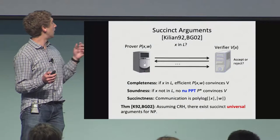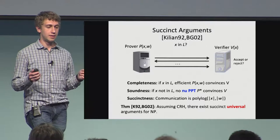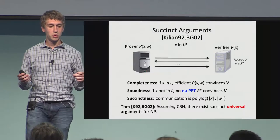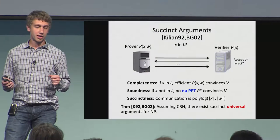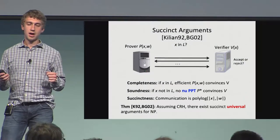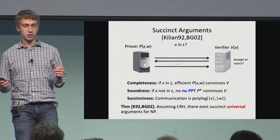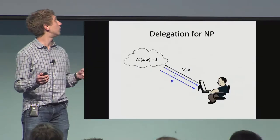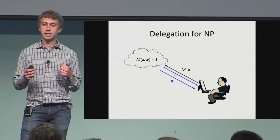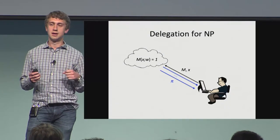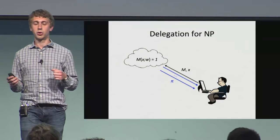Assuming just collision resistance, Killian and then later Brock and Goldreich in 2002 showed that there exist succinct universal arguments for all of NP. This universality means there's one protocol that works for any NP language. In the delegation problem, the server and programmer interact through a number of rounds, and the programmer becomes convinced that the statement is correct.